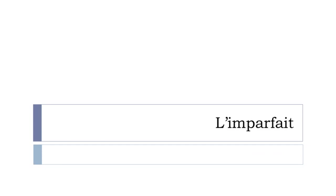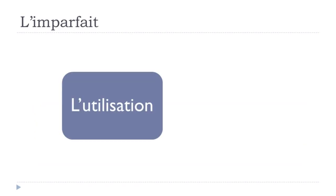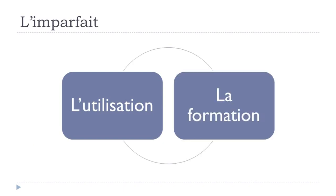L'imparfait. We saw previously le passé composé, the past tense we use quite often, and this is the second one — l'imparfait. In this video we'll see together the first part: l'utilisation, so when do we use l'imparfait, and then the second part: la formation, so how do we construct this imparfait form.